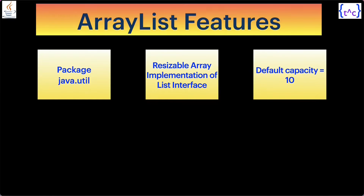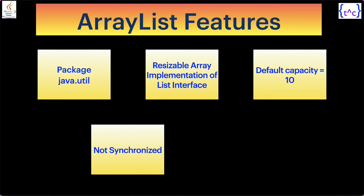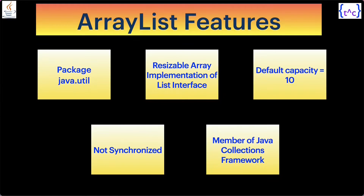Another important point to understand is ArrayList's default capacity is 10. That means whenever we create any ArrayList, by default internally it will allocate size 10. Later on, depending upon the program's need, it can increase the size. But by default in the beginning, it will hold capacity 10. Another thing is ArrayList is not synchronized, and it is a member of the Java collections framework.